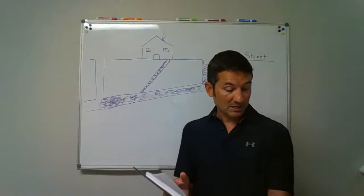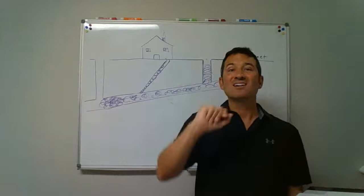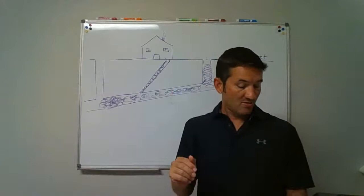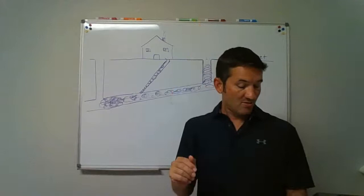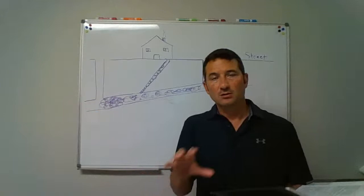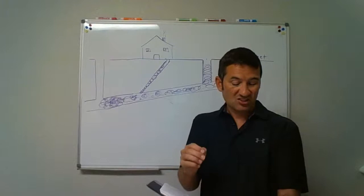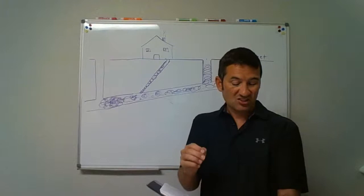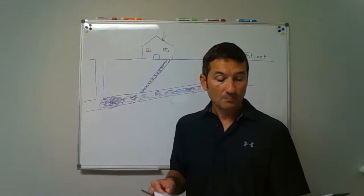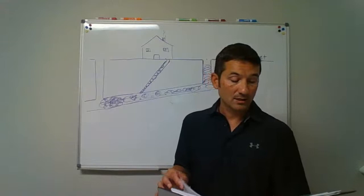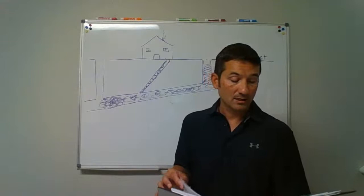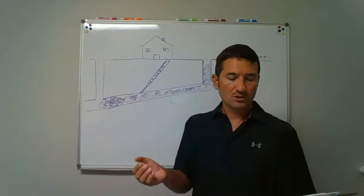Branch, as a general term, is any part of the piping system except a riser, the main, or a stack. A riser is something built vertical; a stack is a general term for vertical pipe; and the main is the trunk line. Think of it like a tree — you've got the main part and all the branches coming off it. Remember that one for the quiz. Branch interval is the distance along a soil or waste stack — generally one story height between floor levels, but not less than eight feet.